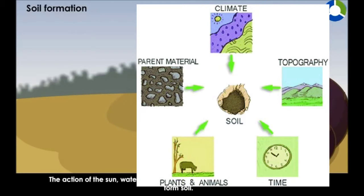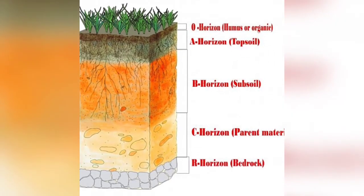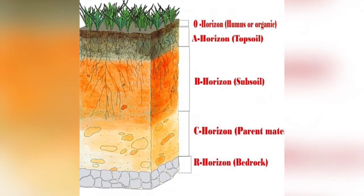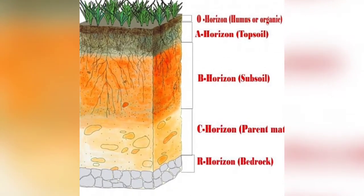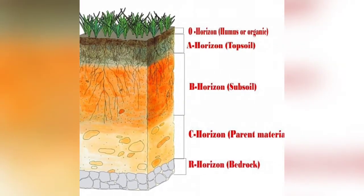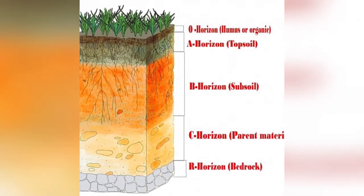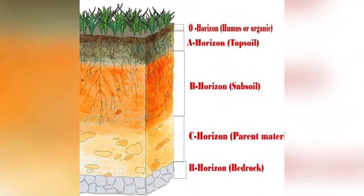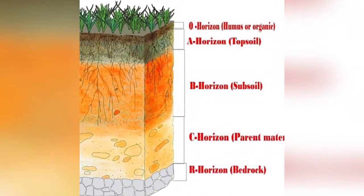The process of soil formation gives rise to four well-marked horizontal layers called the soil horizons. As you can see in the diagram, there are four layers: the topsoil, subsoil, fragmented rock material, and parental rocks.